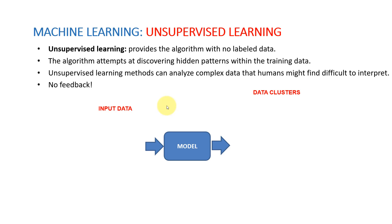The second category, unsupervised learning, involves training the algorithm using only input data — no labels. The algorithm attempts to discover hidden patterns within the training data. Unsupervised learning methods can analyze complex data that humans might find difficult to interpret.